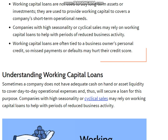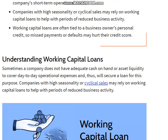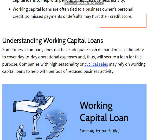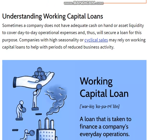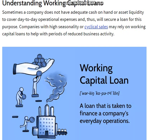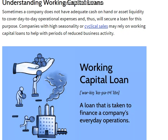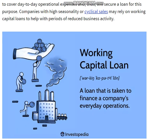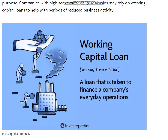Companies with high seasonal or cyclical sales may rely on working capital loans to help with periods of reduced business activity. Working capital loans are often tied to a business owner's personal credit, so missed payments or defaults may hurt their credit scores. Sometimes a company does not have sufficient cash on hand or adequate liquidity to cover day-to-day operational expenses, and will secure a loan for this purpose.